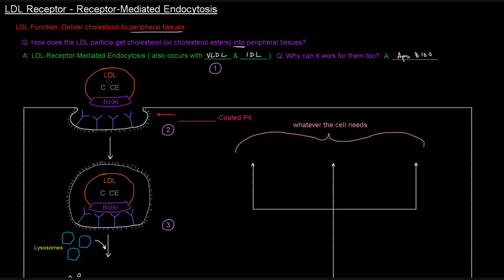So the LDL particle has its cholesterols and cholesterol esters, and it has its APOB100 protein. What's going to happen is that the LDL receptors will recognize and bind APOB100. The LDL receptors are these here in blue.